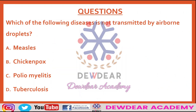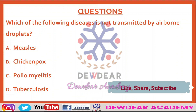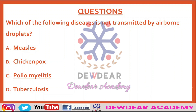Which of the following diseases is not transmitted by airborne droplets? The correct answer is poliomyelitis. Poliomyelitis transmission is feco-oral, meaning it spreads through contaminated food and water.